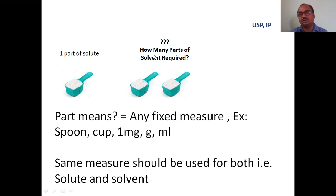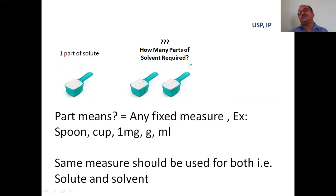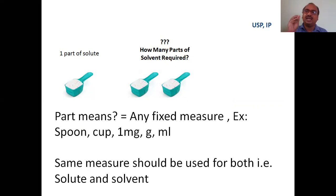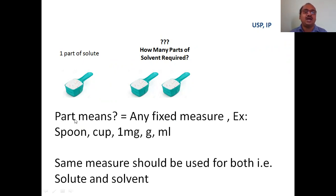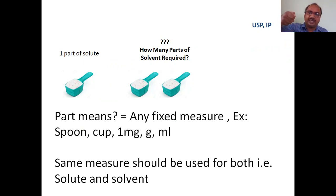The USP and IP have given a solubility table. The table is based on: for one part of solute, how many parts of solvent are required? They didn't give grams or ml — they simply mentioned 'part.' Most students are confused about what 'part' means. It means any fixed measure — it could be a spoon, for example, a standard spoon.